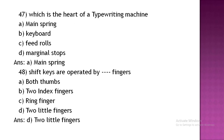Shift keys are operated by which fingers? Option A: both thumbs. Option B: two index fingers. Option C: ring fingers. Option D: two little fingers.